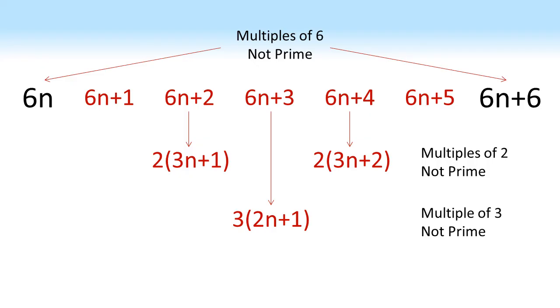So out of our list of numbers, the only ones that can ever be prime are 6n plus 1, which is a multiple of 6 plus 1, and 6n plus 5, which is a multiple of 6 minus 1. Note, we're not saying that they are always prime. We're just saying these are the only possible positions that could be prime, because they're the only ones that aren't definitely multiples of 2, 3 or 6.